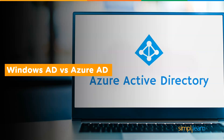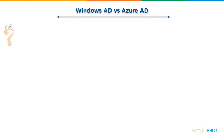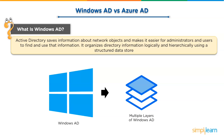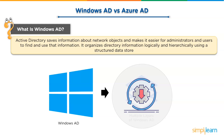But what makes Azure AD so different from Windows AD that it has become more popular among people in technical firms? What is Windows AD? Active Directory saves information about network objects and makes it easier for administrators and users to find and use their information. It organizes directory information logically and hierarchically using a structured data store. But its supreme drawback is its layers, so let's have a look at its layers and its functioning.